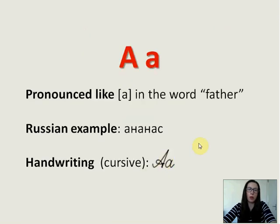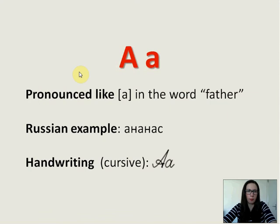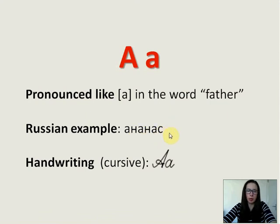А — of course, it is the simplest letter in every language. It is pronounced like A in the word 'father,' and it cannot be anything else apart from А. Russian example: 'ананас,' which means pineapple. After every letter I will give you a word to learn, and by the end you will know a lot of new Russian words.